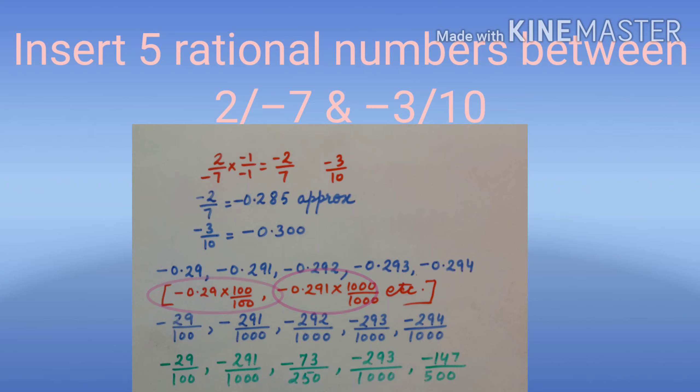Then, remove their decimals. So, solution is minus 29 upon 100, minus 291 upon 1000, minus 292 upon 1000, minus 293 upon 1000, and minus 294 upon 1000. Reduce if you want or keep as it is.